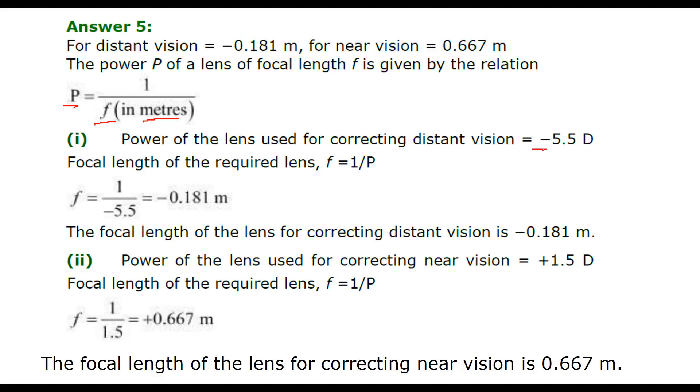In the first case the power is minus 5.5, so we will do 1 by minus 5.5 which will give you minus 0.181. In the second one we have plus 1.5 D, so f equal to 1 by P, 1 by 1.5 which is going to give you 0.667. So the focal length for distance vision is minus 0.181 and for near vision it will be 0.667 meter. This has to be in meter.